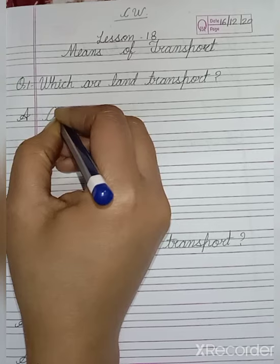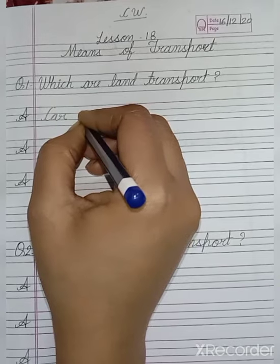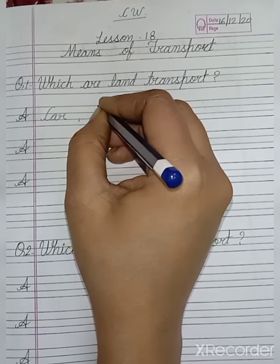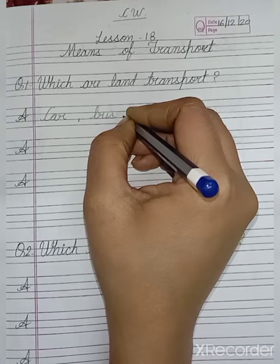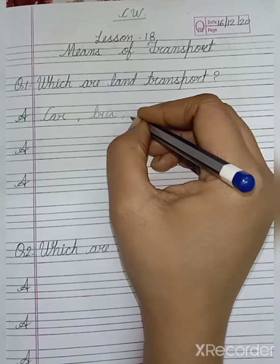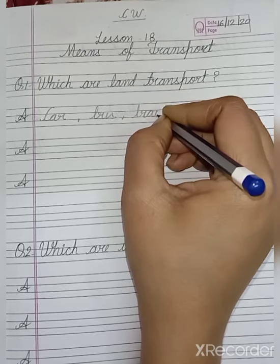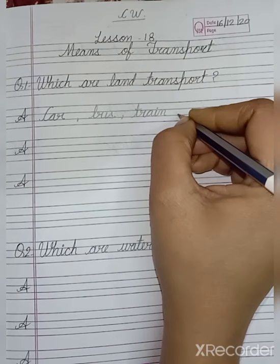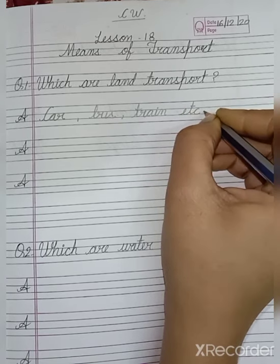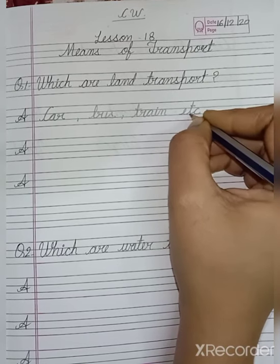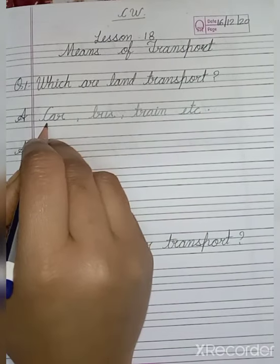C A R car. Zameen par chalte hain? B U S bus. Phir aap ko yahan chhota sa comma lagana hai. And next, T R A I N train. E T C. Phir aap ko yahan par full stop lagana hai. ETC ka matlab hota hai eccetera, matlab aur bhi. Iske alawa bhi hoti hai.